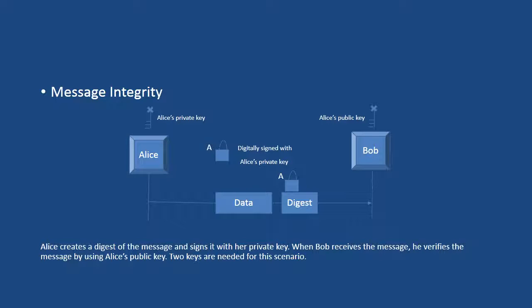In the next scenario, Alice creates a digest of the message and signs it with her private key. When Bob receives the message, he verifies it by using Alice's public key — Bob is using Alice's public key to verify that she is the owner of that message and has actually sent it. In this scenario, two keys are needed: Alice's private key and Alice's public key. Alice must know her private key and Bob must know her public key.